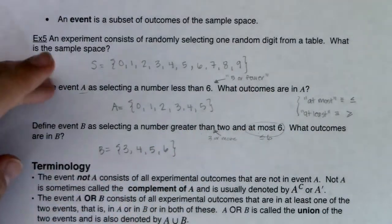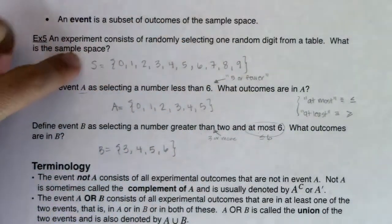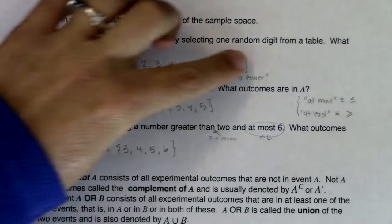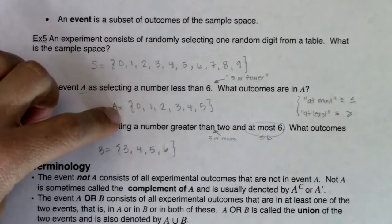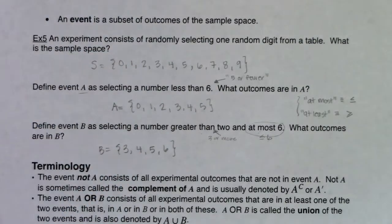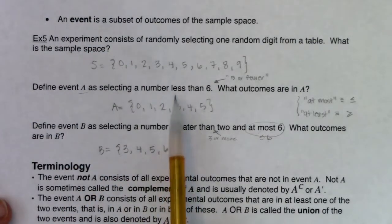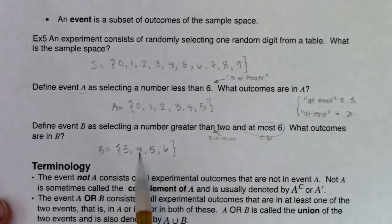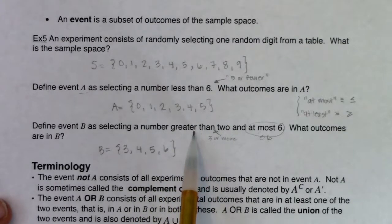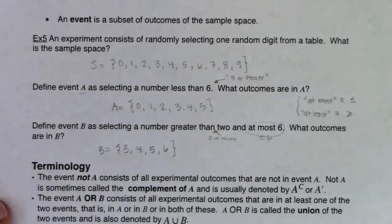So we have our sample space — all possible single-digit numbers — and some of these will be in event A, some in event B. To get into A, you need to be less than or equal to five. To be in event B, you need to be greater than two and at most six.